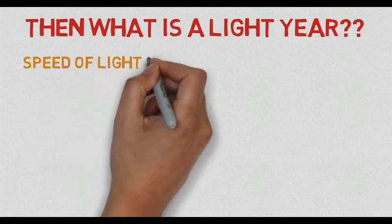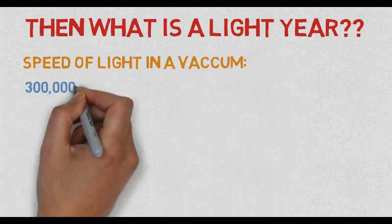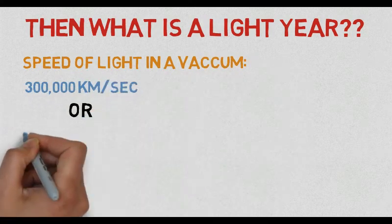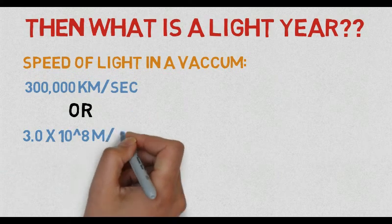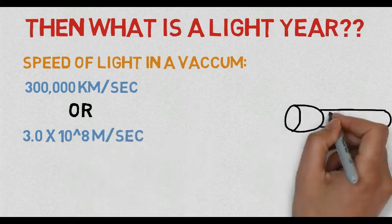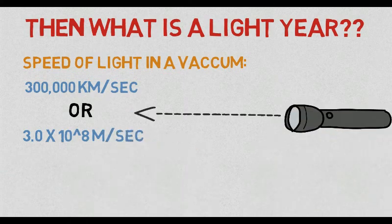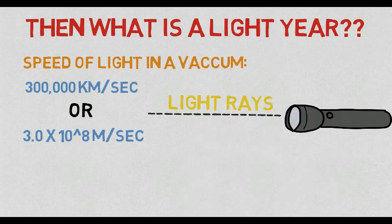Now let's see what this term really stands for. You guys should probably be aware about the speed of light in a vacuum, and that is 300,000 kilometers per second, or 3.0 × 10^8 meters per second. So a light year is nothing but the total distance light can travel in a year.